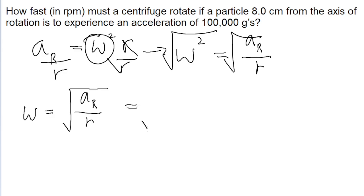So now let's plug in the values we have. Because we're told that the angular acceleration is equal to 100,000 g's, so that's 100,000 times the gravitational acceleration of 9.8 meters per second squared. And this is divided by the radius of the centrifuge, which is given as 8 centimeters or 0.08 meters.